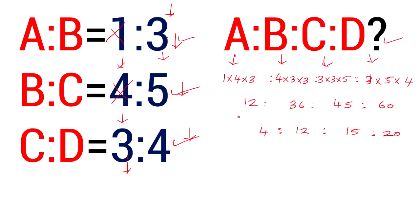A is to B, B is to C, C is to D — that is the common ratio. A is to B is to C is to D is 4 is to 10 is to 12 is to 15 is to 20. It is very easy to work through.